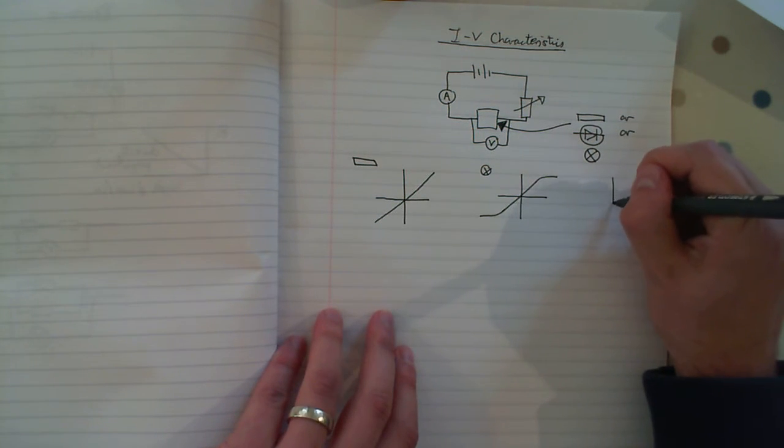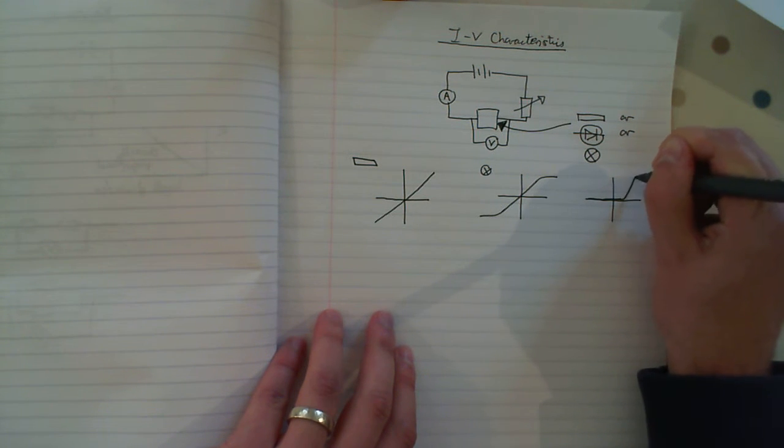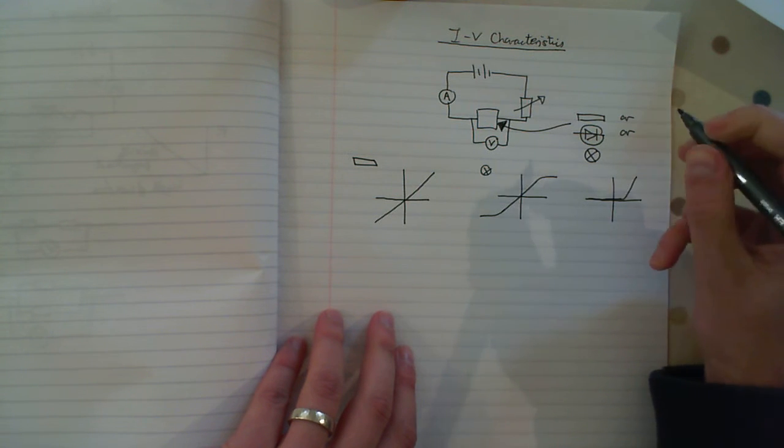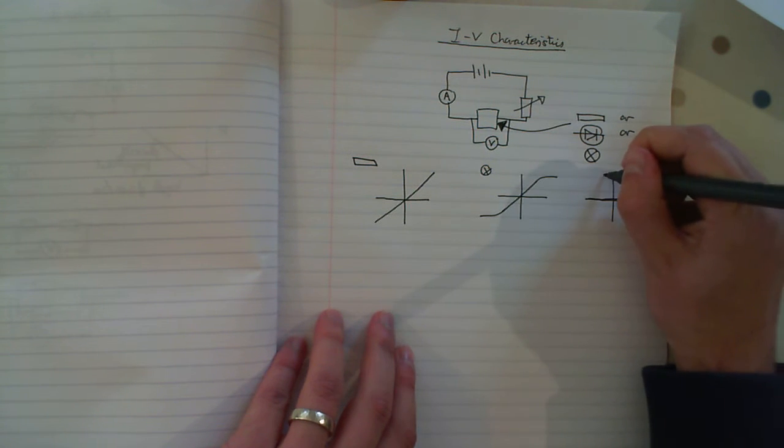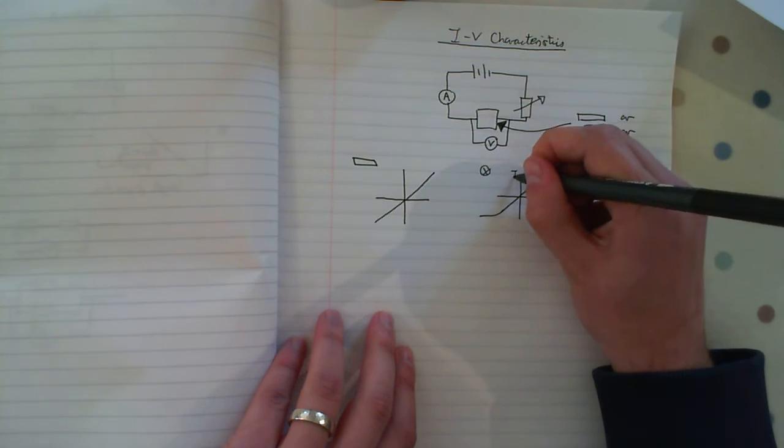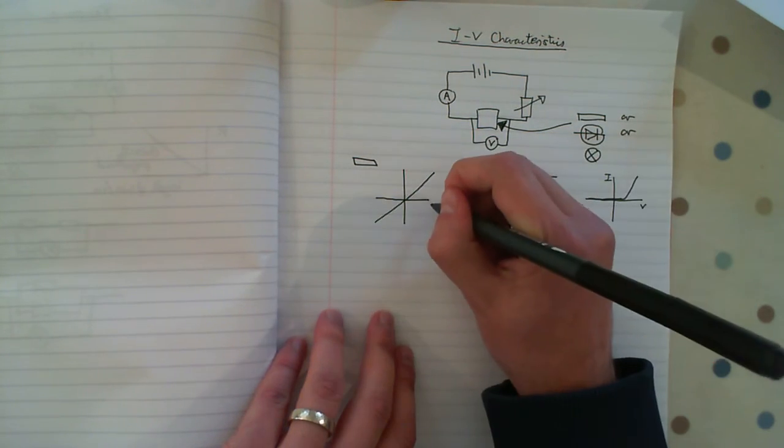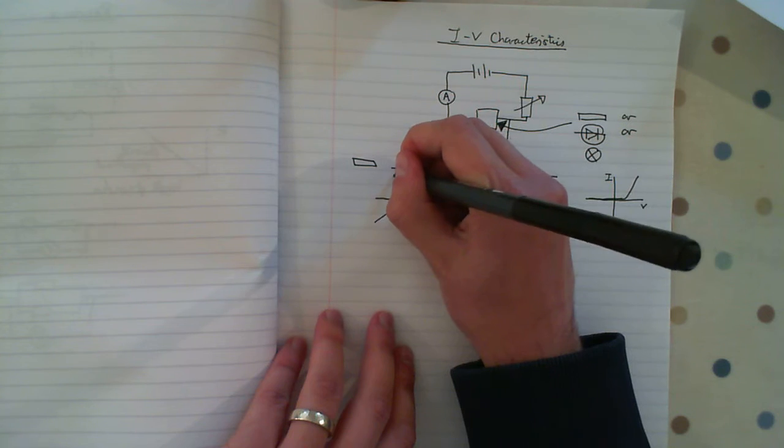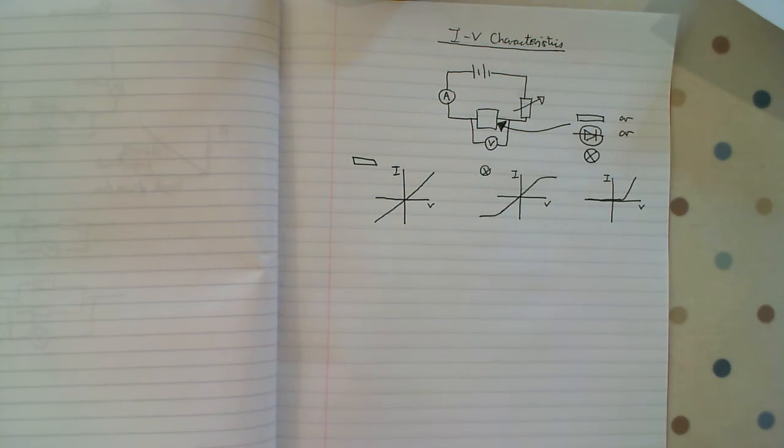And the diode, there's no current unless I reach the threshold, then the current shoots up. So potential difference on the x-axis, current on the y-axis for each graph.